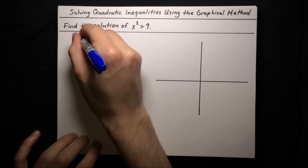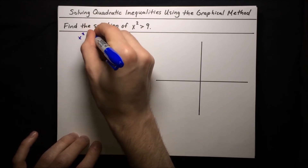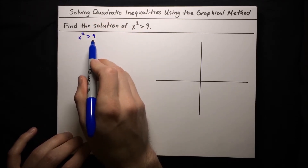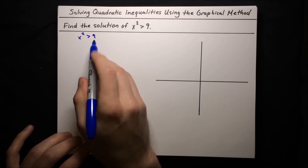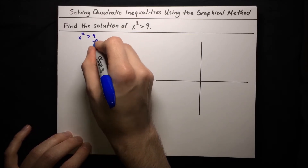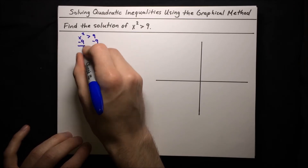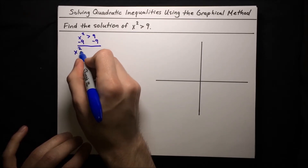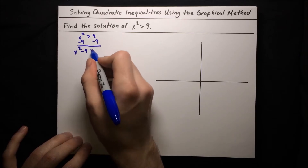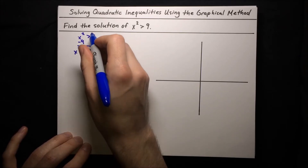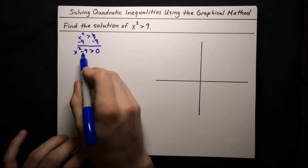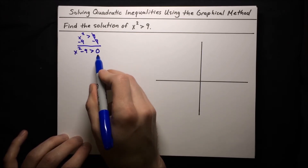Starting off with x squared is greater than 9, we're going to rearrange the inequality so that the right-hand side is 0. Right now it's 9 and we want to make that 0. So in order to do that, let's subtract 9 from both sides. The result will be x squared minus 9 on this side is greater than 9 minus 9, which cancels out to give us 0. So x squared minus 9 is greater than 0.